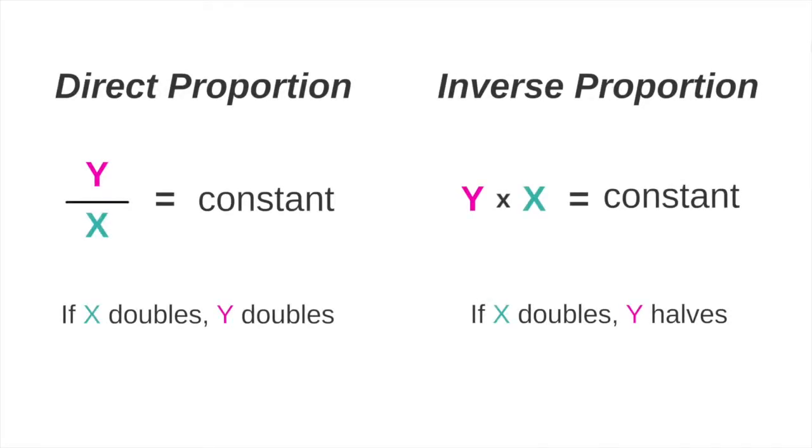So unlike the ratio y over x, in which y is directly proportional to x if the ratio is constant, where x doubles, y doubles, in the product y times x, y is inversely proportional to x if the product is constant. That means that when x doubles, y gets cut in half.